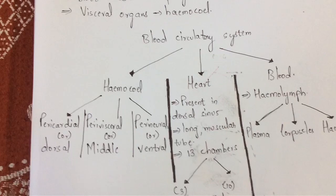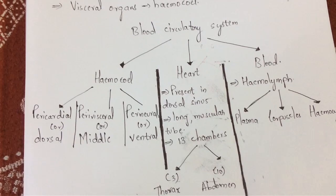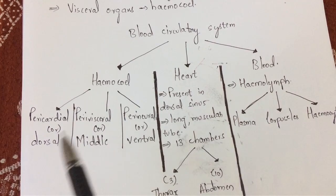The hemocoel is mainly divided into three sinuses: the pericardial sinus, also called the dorsal sinus; the perivisceral sinus, also called the middle sinus; and the perineural sinus, also called the ventral sinus.